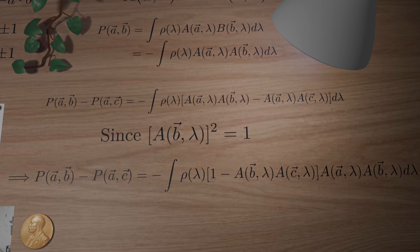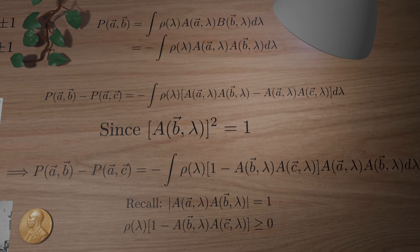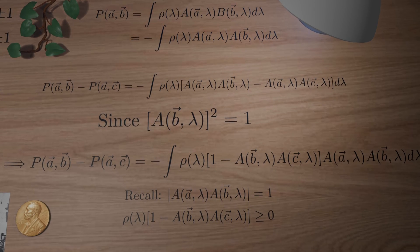Finally, in the last step of the derivation, we recall that the absolute value of the product of A of A times A of B is equal to 1, again using that A can only take values plus minus 1.